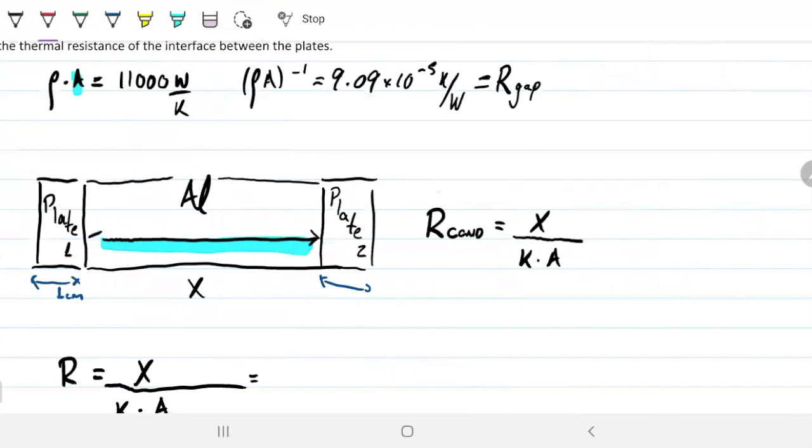So the question is asking, if this resistance is to be the same as the resistance that we had before, what has to be X? And just by looking at the equation, we can see that X will be the K times the area times the resistance of the gap.